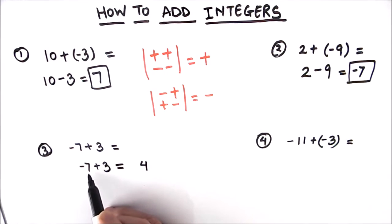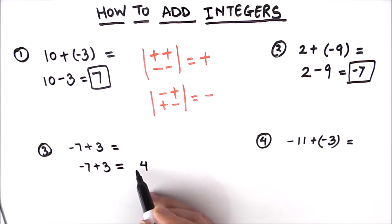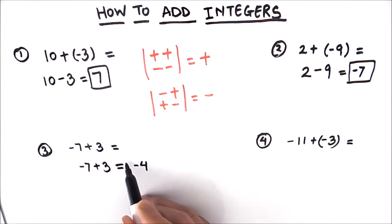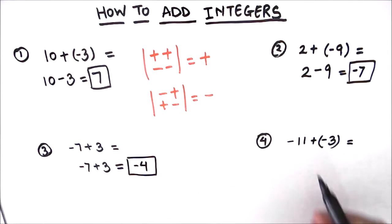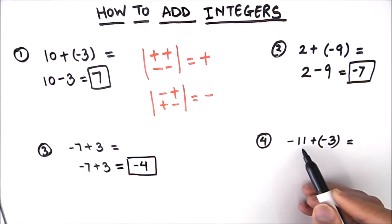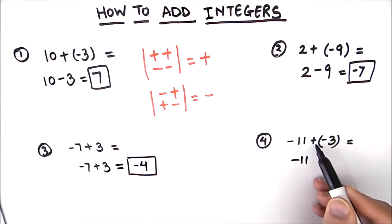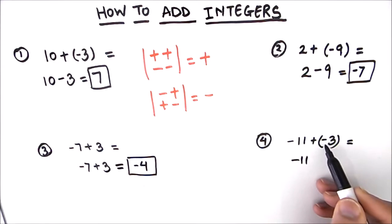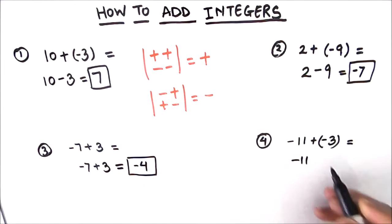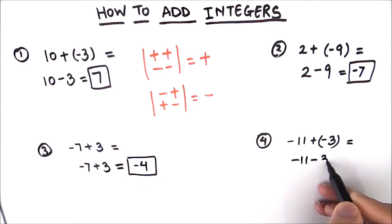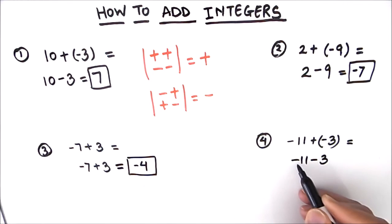The bigger number here is 7, so the answer is negative 4 — that's our final answer. Next, the fourth example is negative 11. We'll write negative 11, and we have two signs: positive and negative. A positive and a negative sign gives us a negative sign, so that's going to be negative 3.